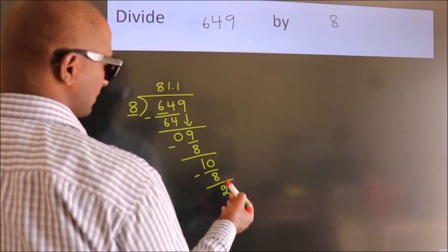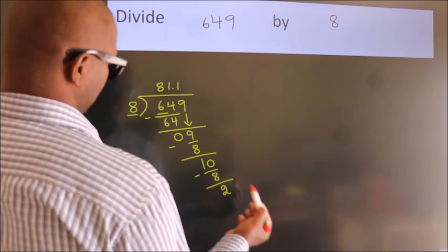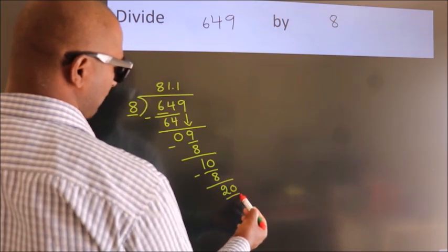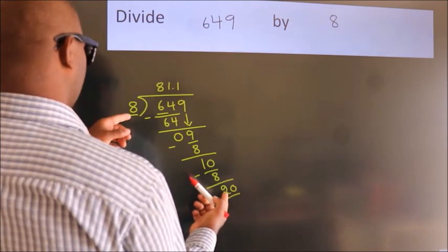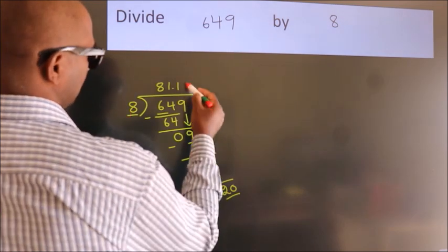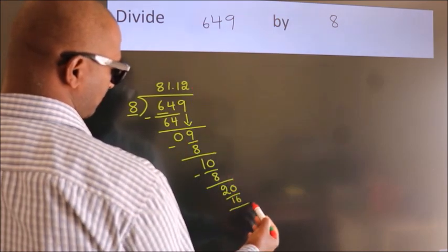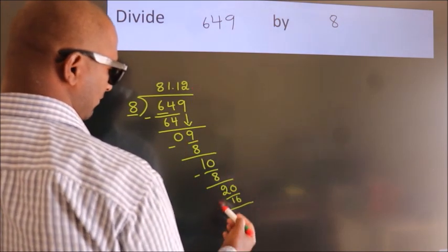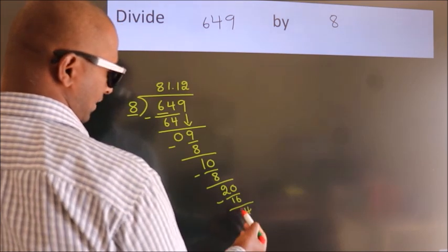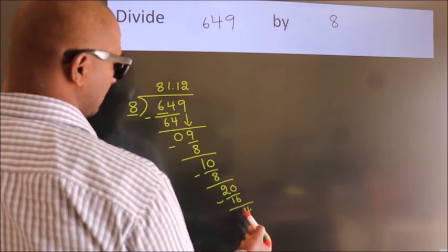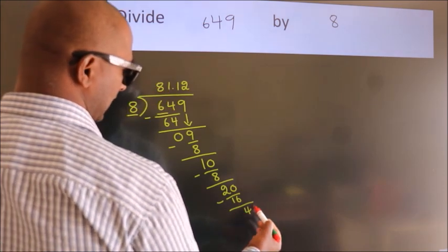After this, we already have the decimal, so directly take zero. So 20. A number close to 20 in the 8 table is 8 times 2 equals 16. Now we subtract and get 4. After this, we already have the decimal, so directly take zero.